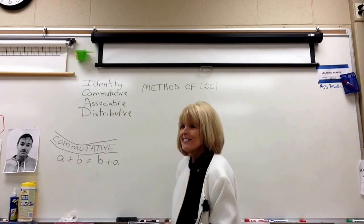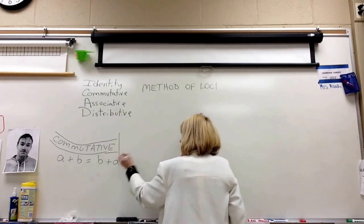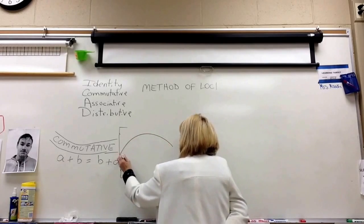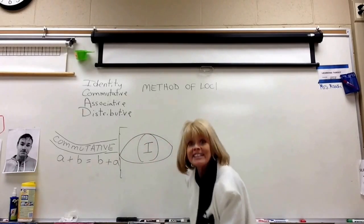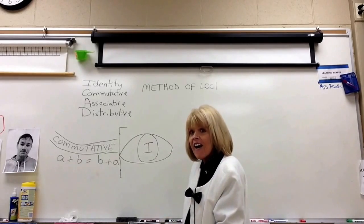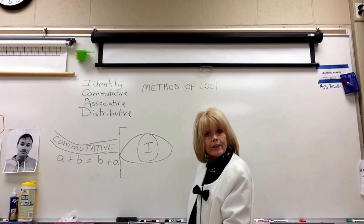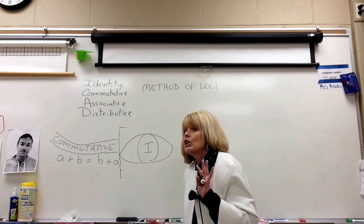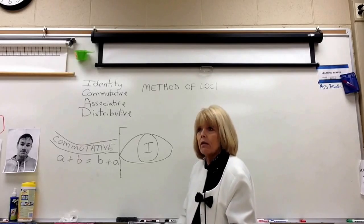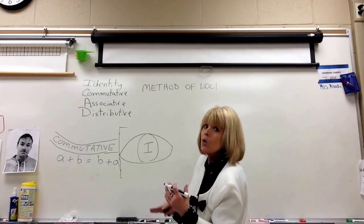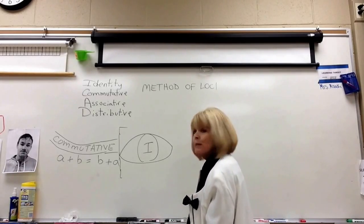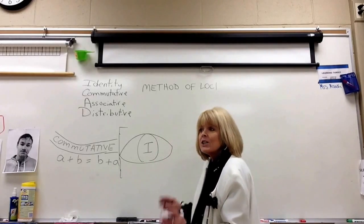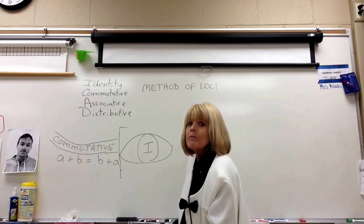Now we're going to enter your house into the living room. And in the living room, we're going to find the identity property. I'm going to draw a big eyeball so you can identify the person that walks in the house. We're putting the identity property in your living room because if somebody walks in your house, you're going to look and try to identify them. You look them in the eye to identify them.